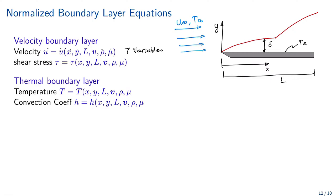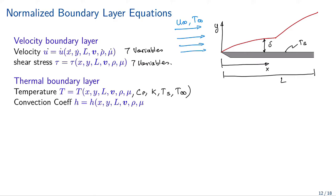For the shear stress we also have the same seven variables. In the case of the thermal boundary layer we have more parameters: besides X, Y, L, velocity, density and viscosity, we also have thermal properties CP, conductivity K, the plate temperature Ts, and the fluid temperature T-infinity — giving 11 variables in total.